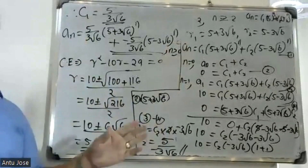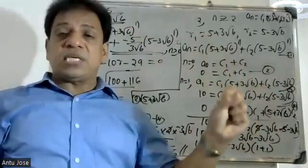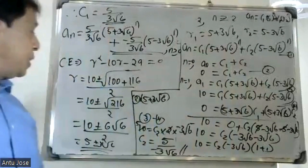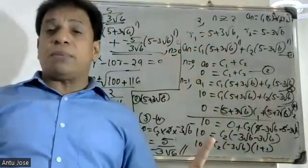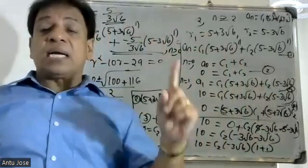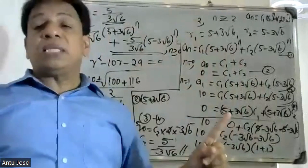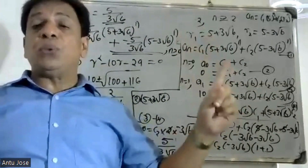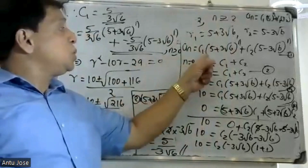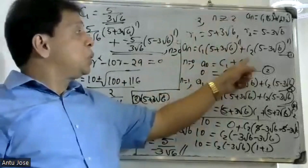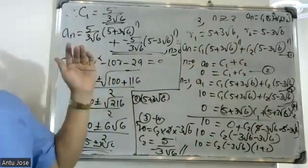The final solution is obtained through the characteristic equation. First we write the characteristic equation and solve for the values 5 plus or minus 3 root 6. These roots are real and distinct. The general solution is aₙ = C₁·(5 + 3√6)ⁿ + C₂·(5 − 3√6)ⁿ, with C₁ and C₂ determined by the boundary conditions.